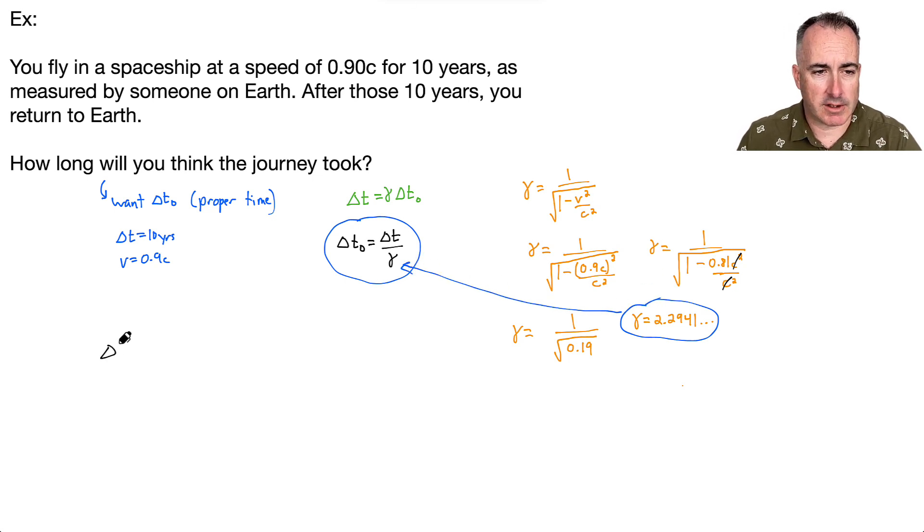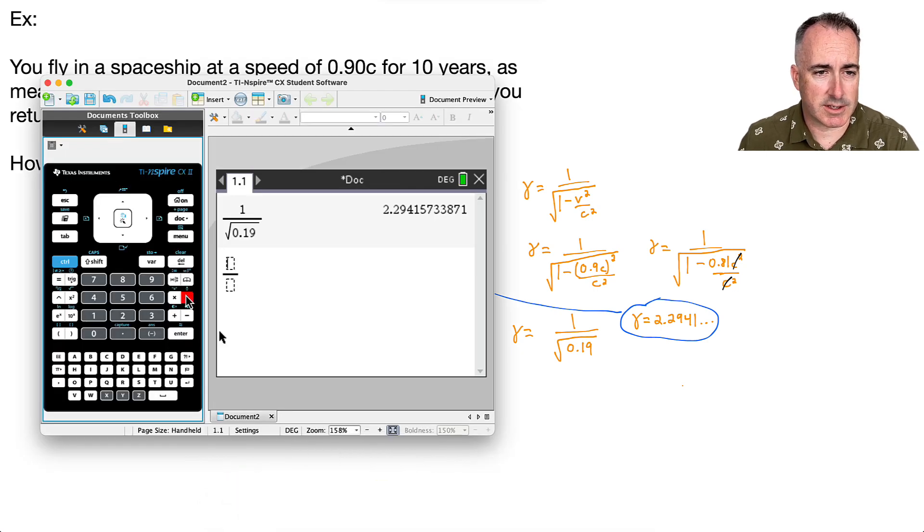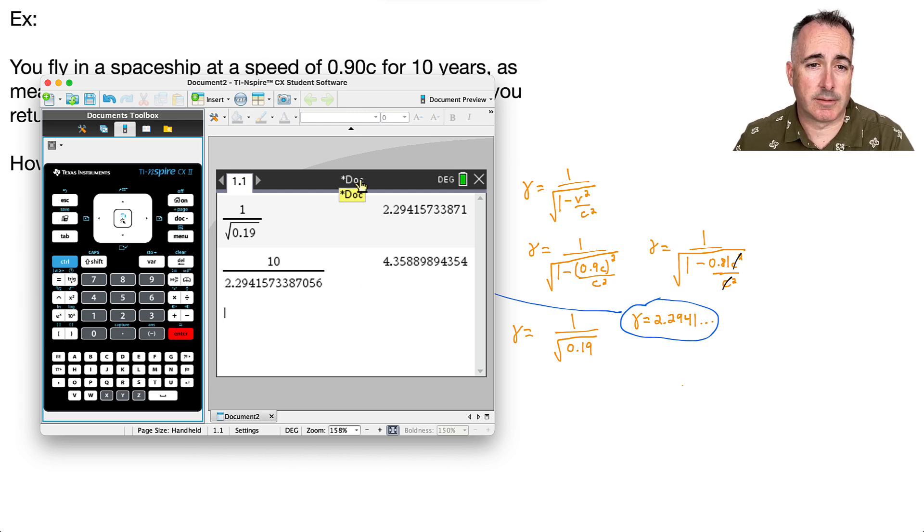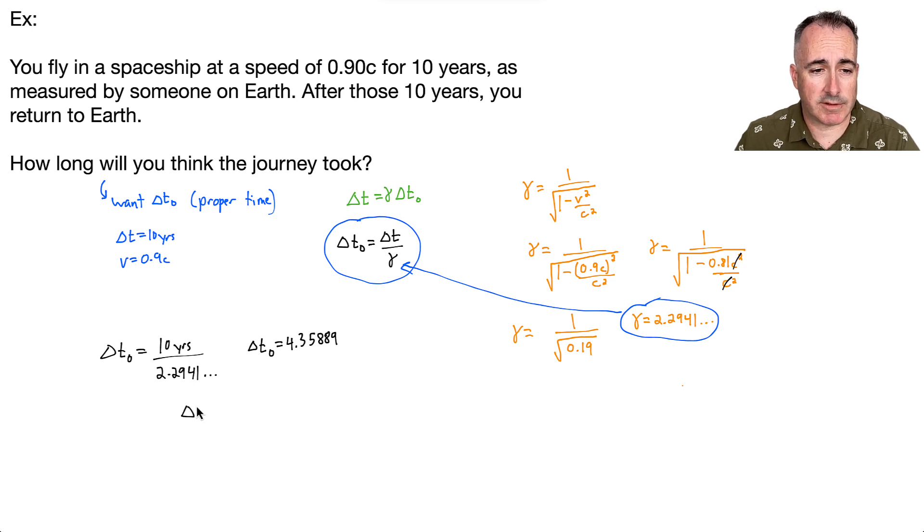So I'm going to use that number right there. And I'm going to shove it into this one, because now I know that answer. So that means, then, that I have delta T0. In other words, the proper time is equal to delta T, which, again, is 10 years, over this 2.2941. Let me do that on my calculator. So I'm going to say, what is 10 over the answer? And I end up with 4.35889. Well, if I write that answer to two significant figures, which is what I'm allowed, that's the least that I have here, it's going to be 4.4, and keep in mind the units, it's going to be years.